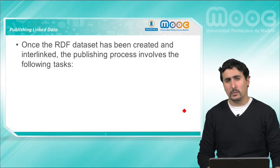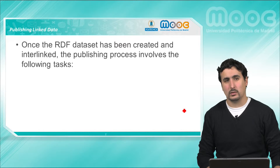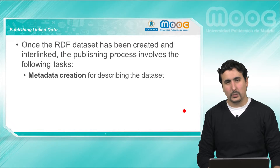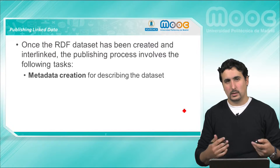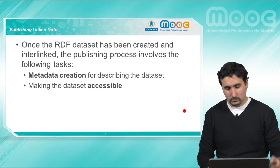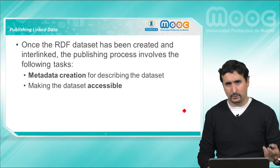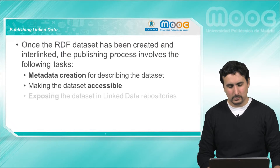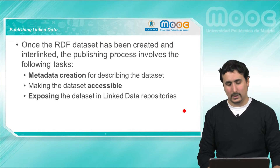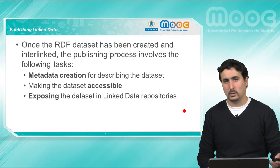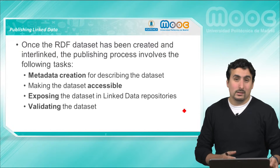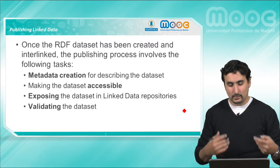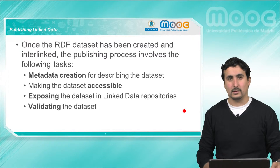In order to do that we have to make sure that the data meets the linked data principles, which involves creating metadata, that is annotating our data set in a way that it can be understood, making the data set itself available online, accessible for others to use it through different means, as well as exposing the data set in linked data repositories so as to make it discoverable, and finally validating that the data our data set contains is correct and that the data set can be accessed.